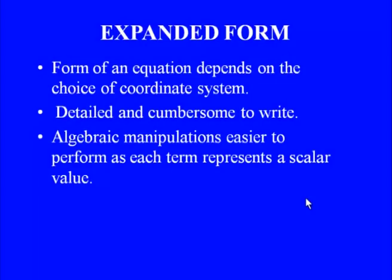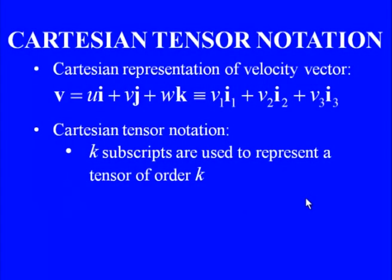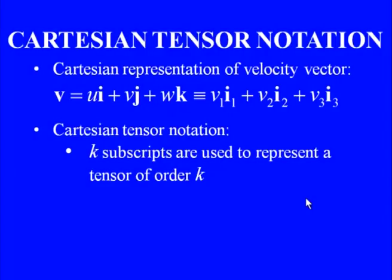The expanded form equations are detailed and cumbersome to write, but algebraic manipulations are very easy to perform. Each term represents a scalar quantity and the order of terms is not critical. For final numerical discretization or computer programming, all flow equations are written in expanded form. Cartesian tensor notation is primarily used in manipulation of equations or schematic representation of algorithms.